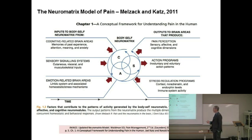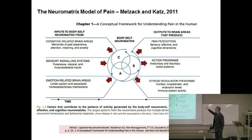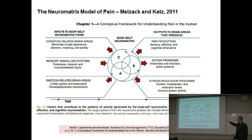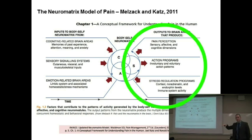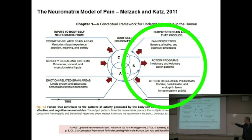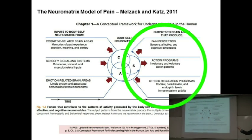There are a couple of things I like about this model, so it's worth a while to look at it. First of all, the idea here that pain is but one possible output. If you look over here on the right, these are the outputs. Pain perception is one — it has sensory, affective, and cognitive dimensions. But then there's also this idea of action programs, the motor system. We've got stress regulation programs, and then a couple of specific ones here: cortisol or adrenaline, endorphin, immune system — the autonomic system. All these sorts of things — the outputs are quite varied.